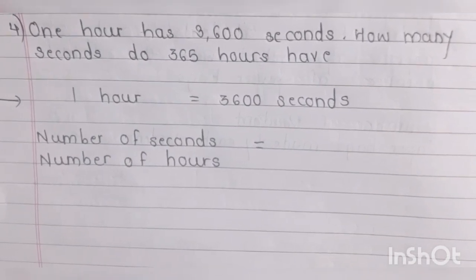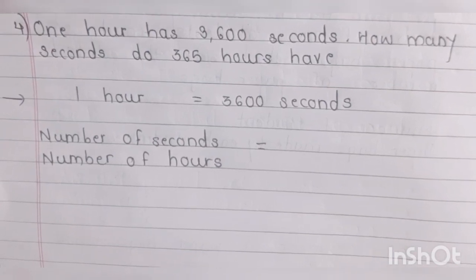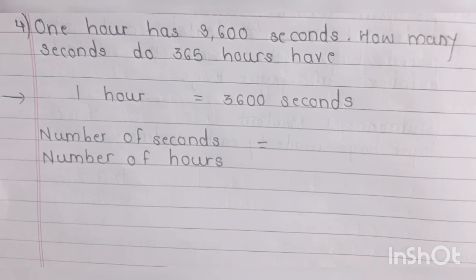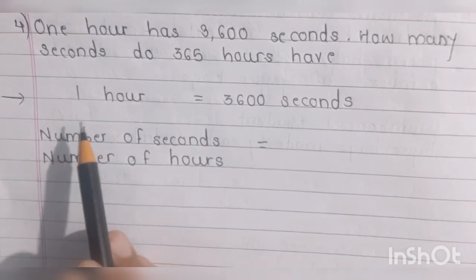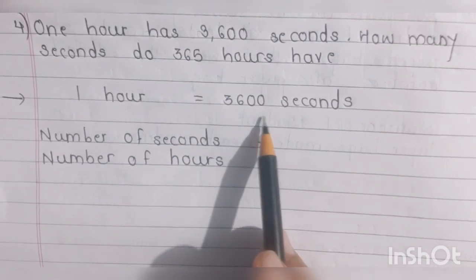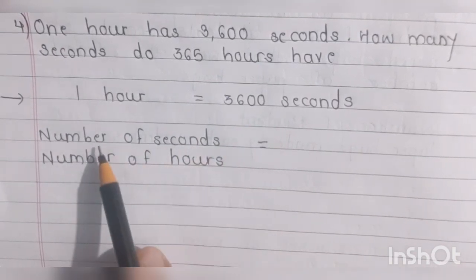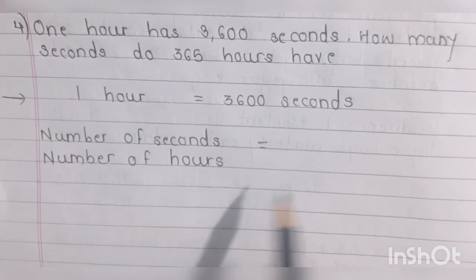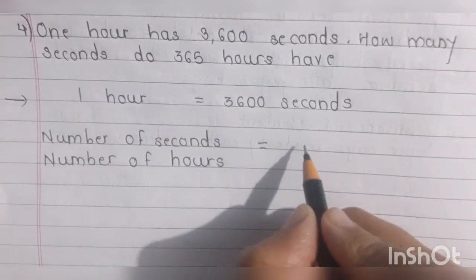Moving on to the next question: one hour has three thousand six hundred seconds. How many seconds do three hundred and sixty-five hours have? What they have given: one hour means 3600 seconds. What they have given: number of seconds — how many seconds do they need to find?